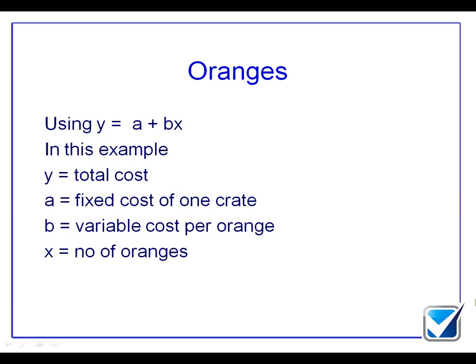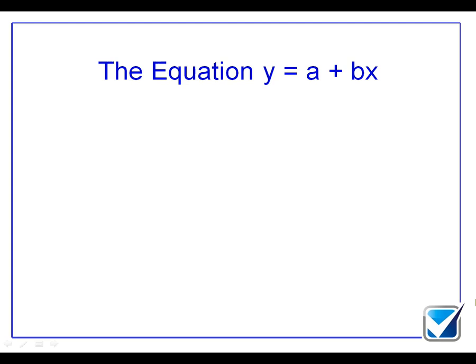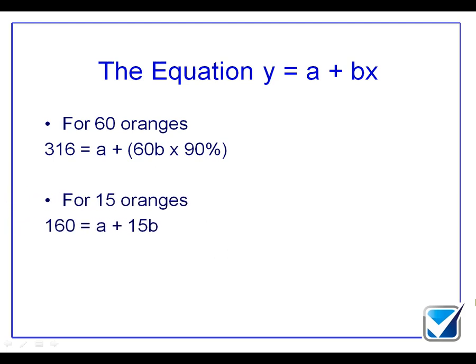And we're still going to make the big assumption that we have this type of algebraic straight line relationship, but there may now be a kink in the line. And what we're going to do is we're going to say that for 60 oranges, the total cost will be shown as 316, which we showed you before, equals fixed cost plus the variable cost of 60 oranges, but now multiplied by 90% because you get a 10% discount. The low equation that we're going to use is going to be for 15 oranges, 160 equals A plus 15B. Now we need to solve this for A and B.